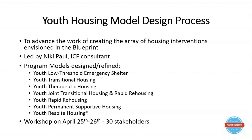The program models we're looking at are everything available for youth and everything we've identified that we want: low threshold emergency shelter, transitional housing, therapeutic housing, joint transitional housing, rapid rehousing, permanent supportive housing, and youth respite housing. There was a workshop held at the end of April with 30 stakeholders representing youth programs of all types, some adult and family programs that serve a lot of youth, the coalition, four or five members of our Youth Action Board, and Chapin Hall. It was an intensive two-day workshop where we all worked on designing each of these program models.